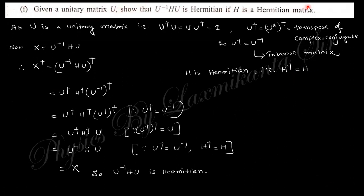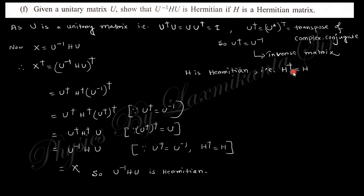The next question: given a unitary matrix U, show that X = U†HU is Hermitian if H is Hermitian. Since U is unitary, U†U = UU† = I, which means U† = U⁻¹. Hermitian means H† = H, where the dagger denotes the conjugate transpose — first take the complex conjugate (replace i with −i) then interchange rows and columns.